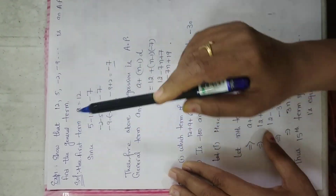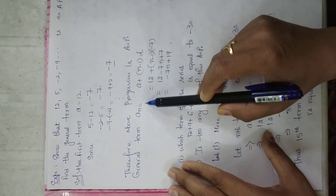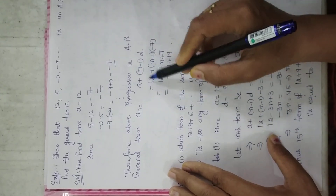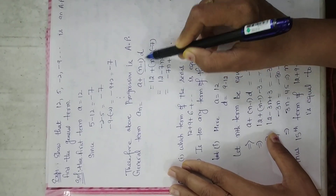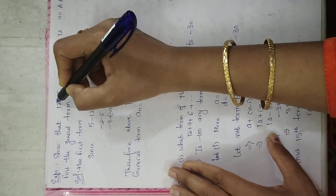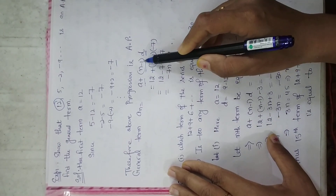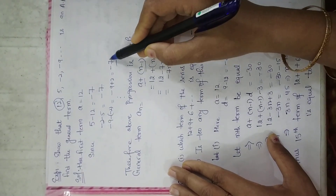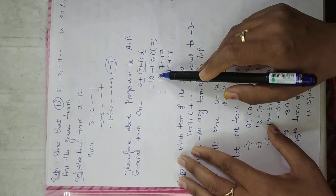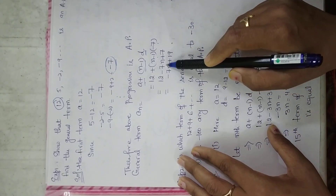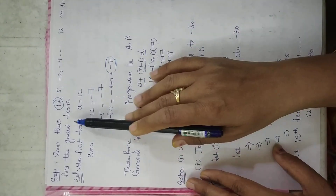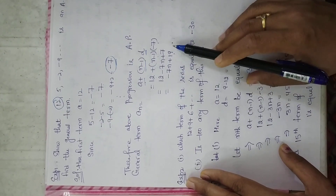Now, how to find the general term? The nth term formula is a plus (n minus 1) into d. Here a, the first term, is 12, and d, which we just calculated, is minus 7. Substituting: 12 plus (n minus 1) into (minus 7) gives 12 minus 7n plus 7, which is nothing but minus 7n plus 19. So the general term of this AP is minus 7n plus 19.